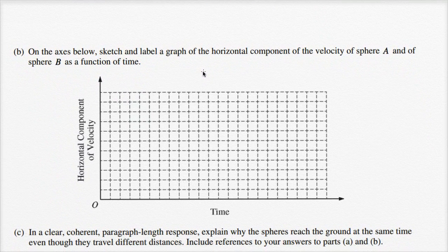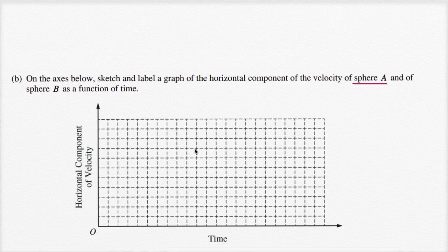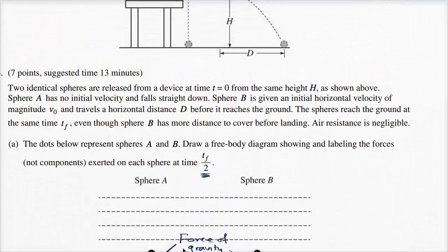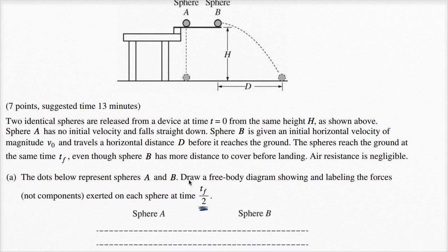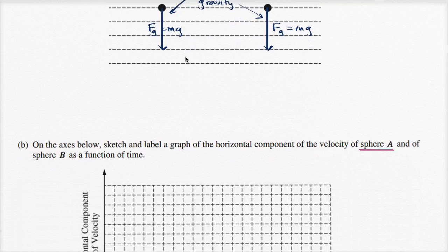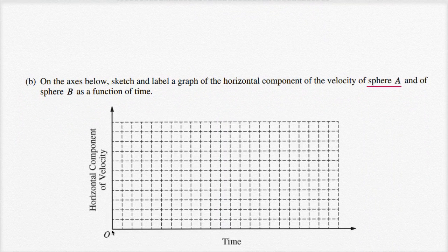On the axes below, sketch and label a graph of the horizontal components of the velocity of Sphere A and Sphere B as a function of time. Sphere A has no horizontal velocity the entire time — it's only going to be accelerated in the vertical direction, accelerated downwards. So Sphere A has no horizontal velocity, and I draw a line along zero the entire time.